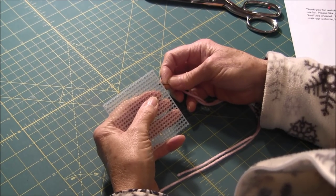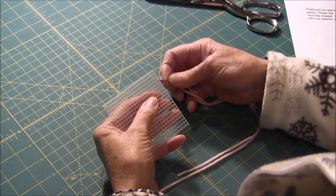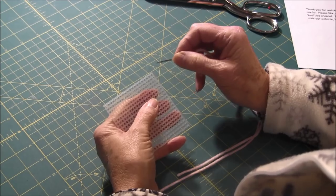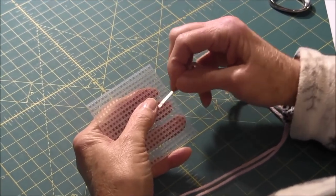The continental stitch is a type of tent stitch. This stitch is worked diagonally over one intersection of the canvas and can be worked either horizontally or vertically.